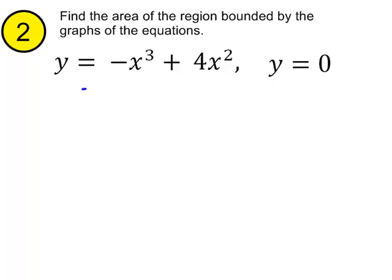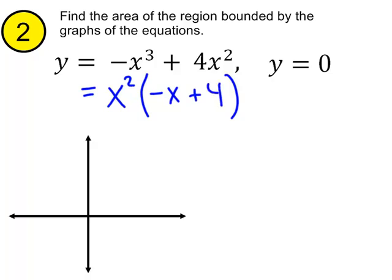So, to figure out what this curve looks like, let's start by just factoring this. It looks like we could factor out an x squared. And we would then get negative x and then plus 4. And if I set that equal to 0, I can see that x equals 0 and x equals 4 are going to be my x-intercepts. Okay, so that's a start.